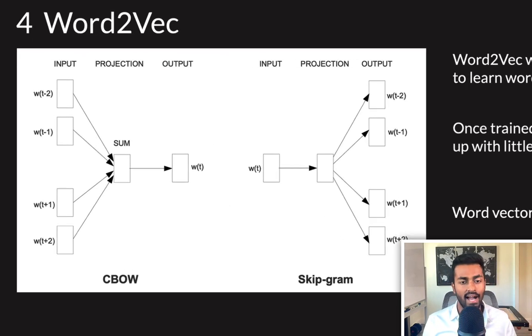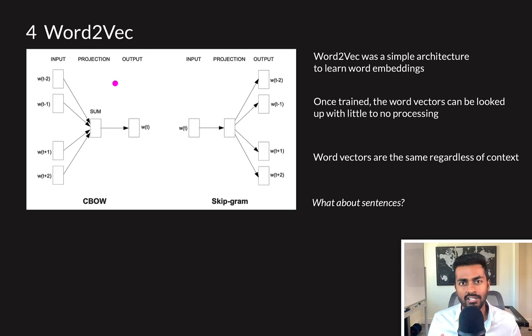So the Word2Vec framework actually consists of two different architectures. One of them is the continuous bag of words architecture, and the other is the skip gram architecture. Both are very similar in how they operate. During the training phase, for example, we would pass in the contextual words of a sentence, and then have them aggregated, and it would learn the center word representation. And the opposite is true for the skip gram case. Now, once these models were trained, we could essentially just look up the word vectors for a given word. And it wouldn't change with respect to context. So, for example, the queen in 'drag queen', and the queen in 'king and queen', despite having different meanings, would still be mapped to the same vector representation.